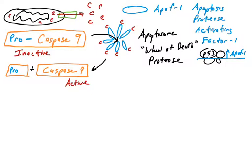Caspase-9 is a classical example of a zymogen or proenzyme. Caspase-9 is itself a protease. So we just had a protease — the apoptosome — cleave and activate a protease, caspase-9, which is going to cleave and activate more proteases. This is known as a protease cascade, similar to the Raf-Mek-Erk kinase cascade, where one kinase phosphorylates and activates the next. This allows for amplification of a signal.